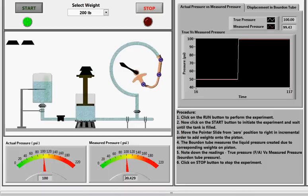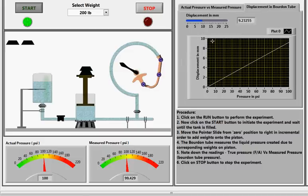A graph is also being plotted between the actual and measured pressure. Displacement in the Bourdon tube is also calculated as shown in the numeric indicator.